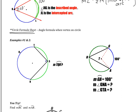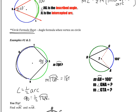We have two examples. Example one asks: what is the measure of arc TQR? We're looking for this arc right here. We know the angle is 90 degrees, and the angle is one half of the arc. So 90 is one half of arc TQR. If I multiply both sides by two, I get the measure of arc TQR to be 180 degrees. That means we have a semicircle, so arc TQR is actually a semicircle.